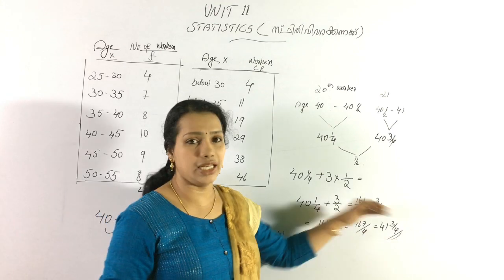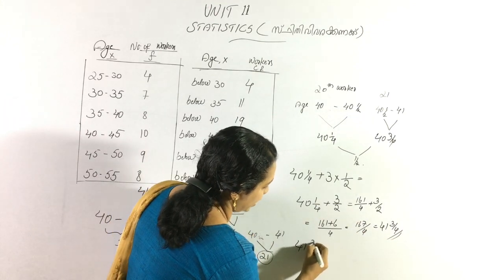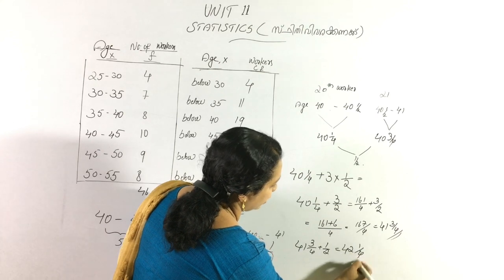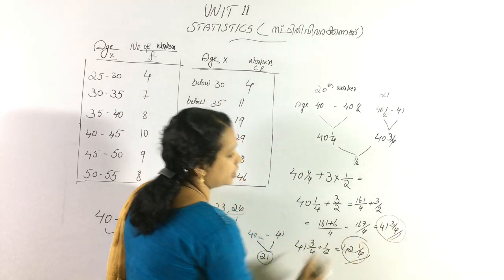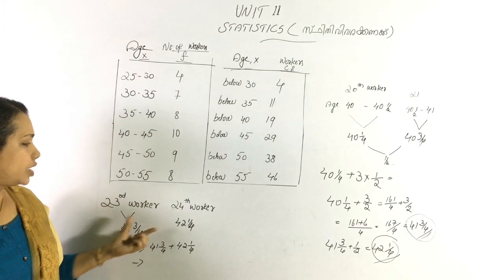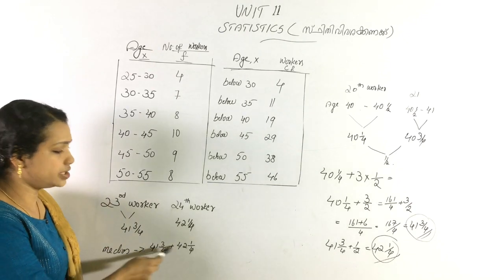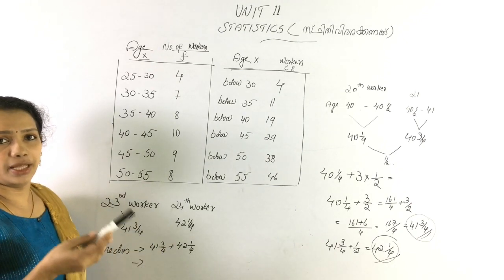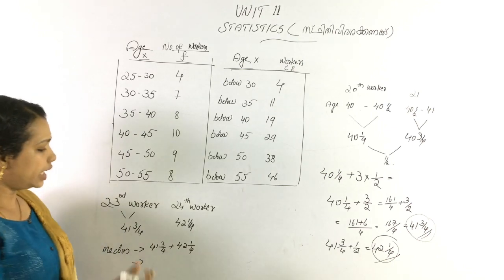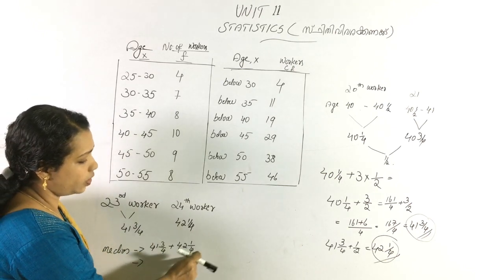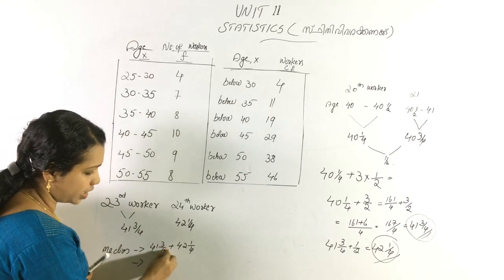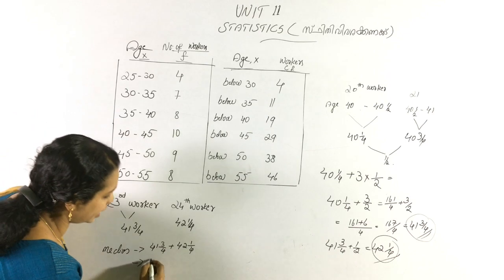The age at position 23 and the age at position 24: 41 and 3 by 4 plus 1 by 2 gives 41 and 1 by 4. Now, we add the average of positions 23 and 24. If we find the average of these two ages, that gives us the median age of 24.